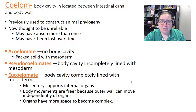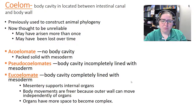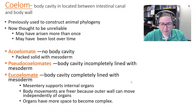In a eucoelomate, mesentery supports internal organs, body wall movements are more independent of the organs, and the organs have more space to become more complex.